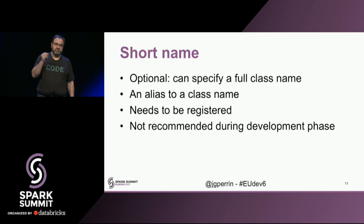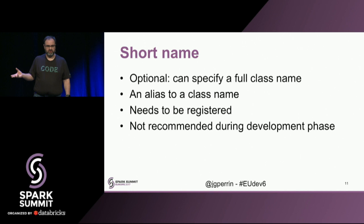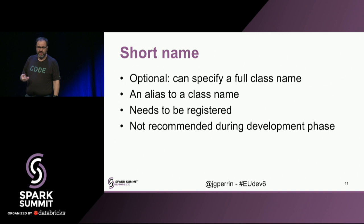You can have a short name — as you saw, I had a short name called 'exif' — but it's optional. You can specifically put a class name and Spark will dynamically load it. The short name is really just an alias to a bigger name and needs to be registered. I'm going to show you how to do that, but I'm not recommending this during the development phase. When you're in development and trying to understand where things can go wrong, I'd like people to be able to debug.